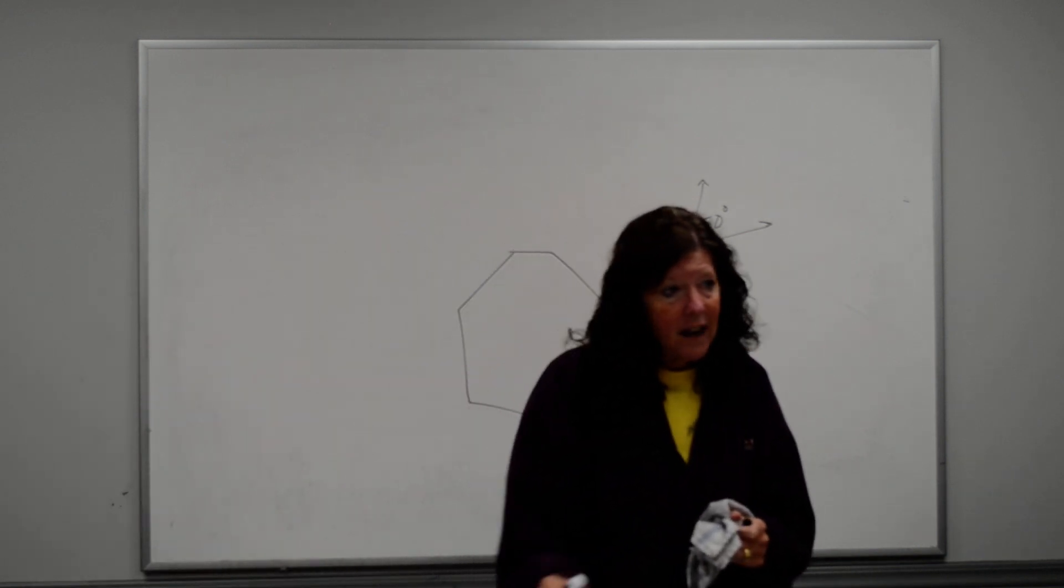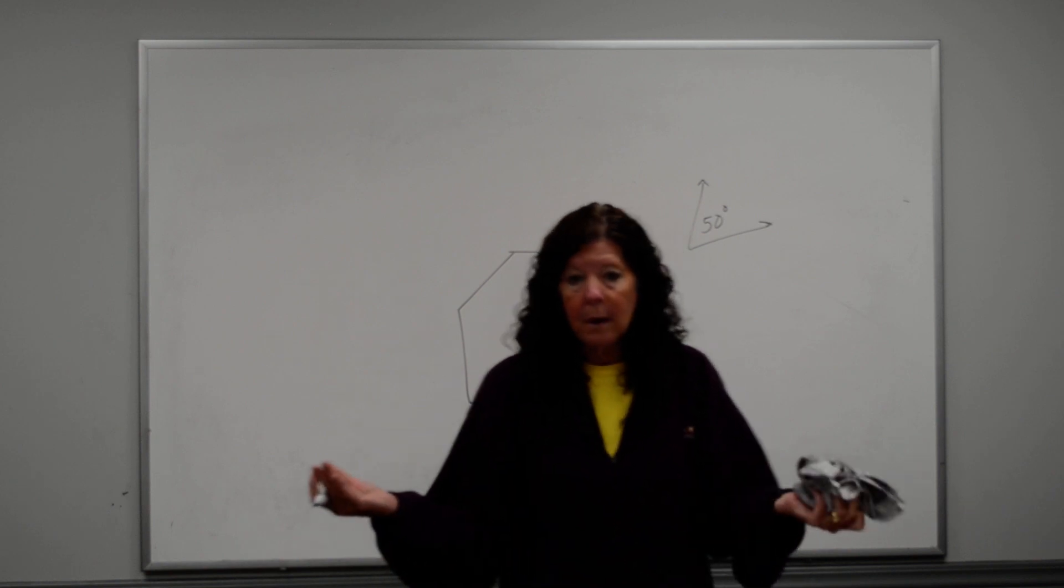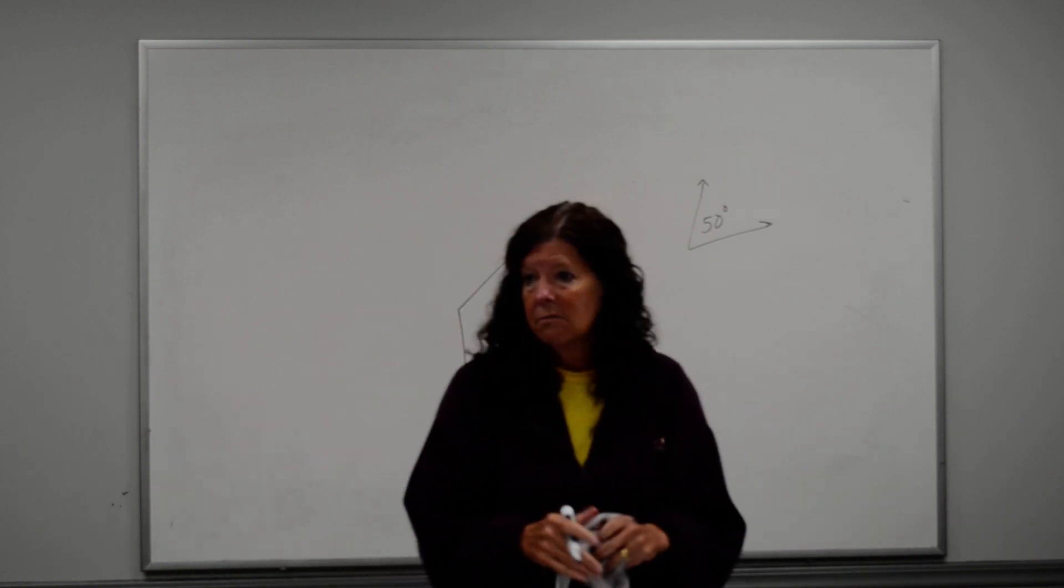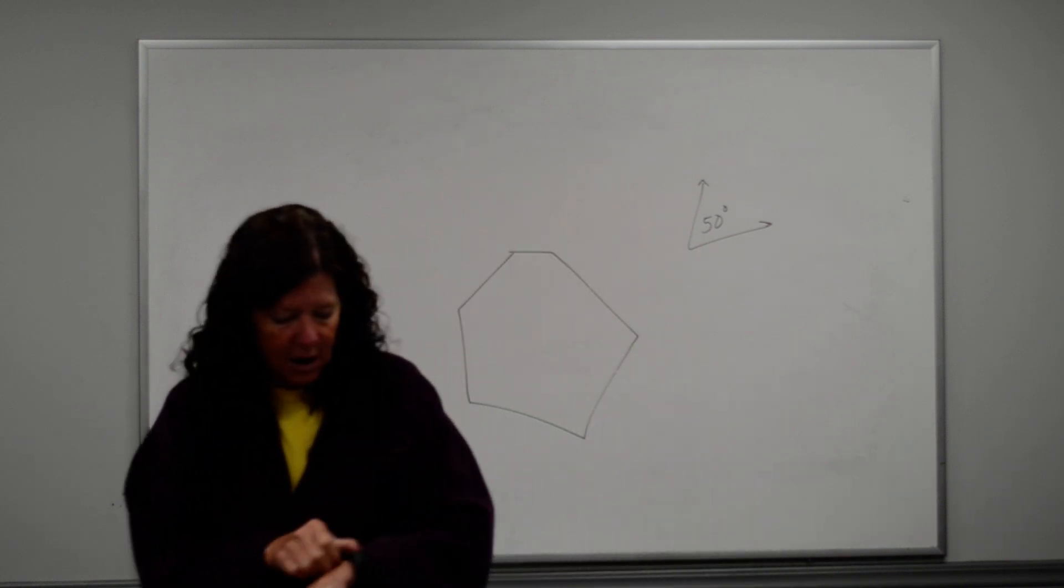So you should be able to classify with any of these, okay, and recognize it. And then perimeter means all the sides added together. And that's it. Okay? That's the information in a nutshell.